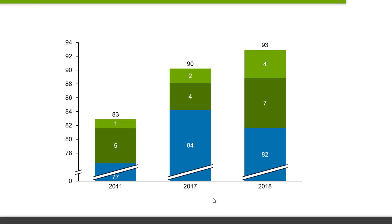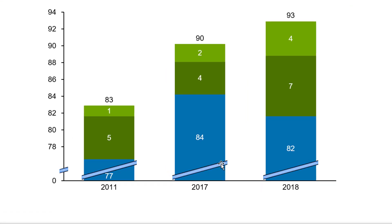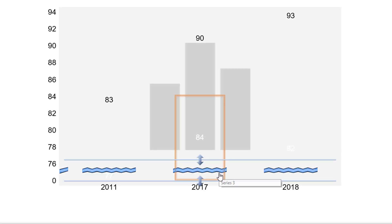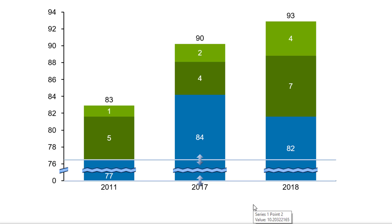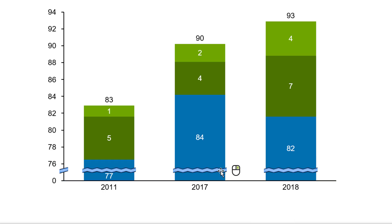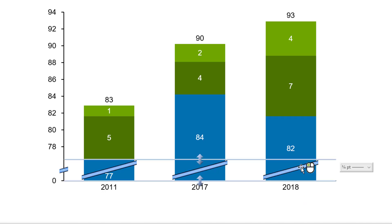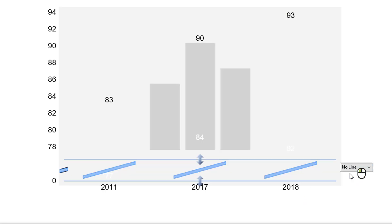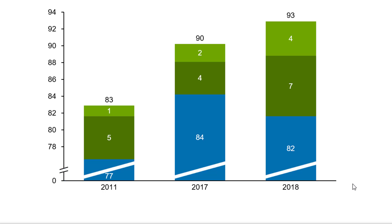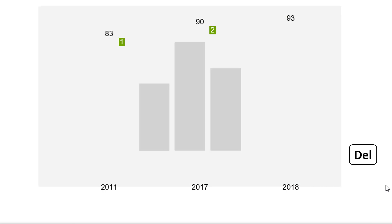You can also change the style of the breaks. Right-click on the break and select Set Wiggle Shape from the context menu to switch the straight break into a wiggle. Vice versa, click on Set Straight Shape to turn a wiggle into a straight break. To hide or show the break's outline, left-click on the break and pick your preferred option from the floating toolbar. To delete a break, just select it and hit the Delete key.